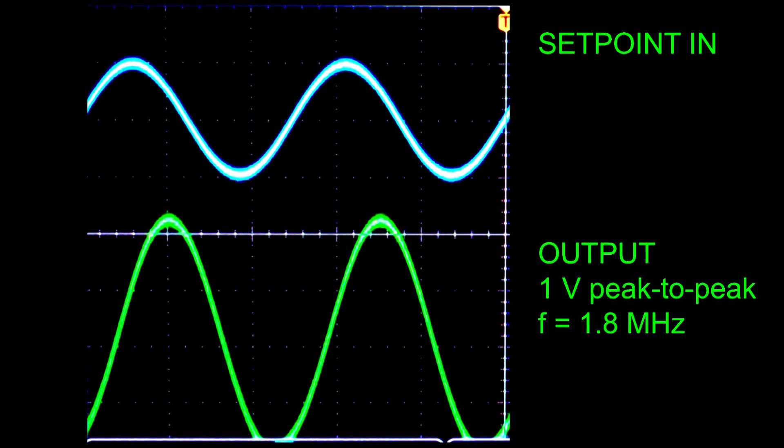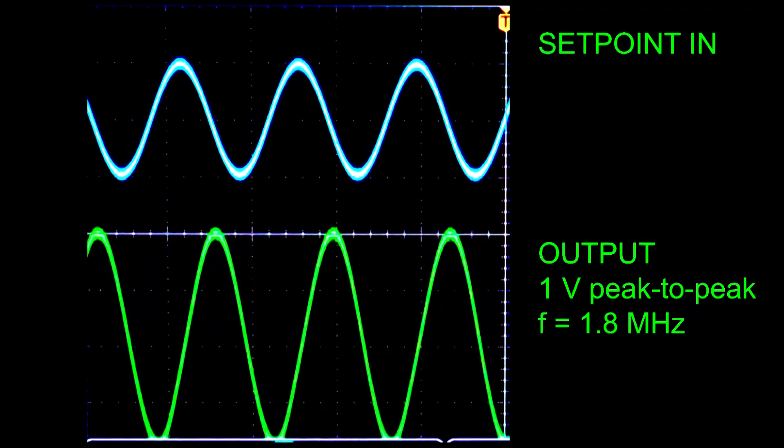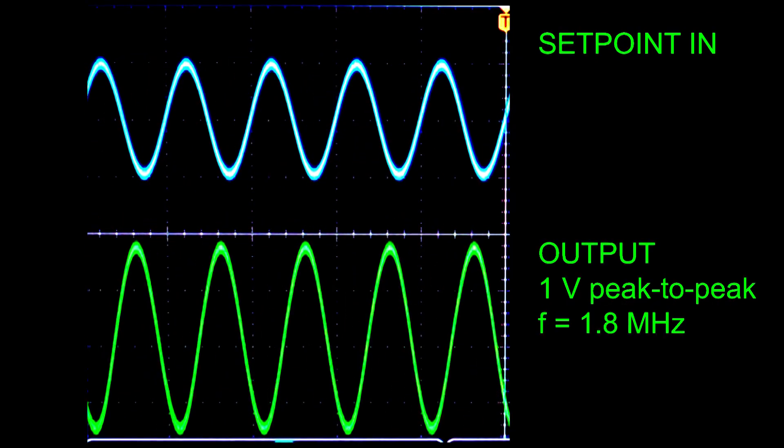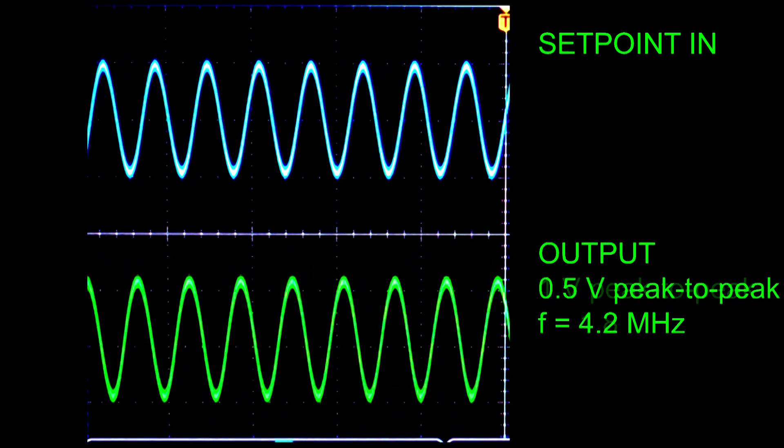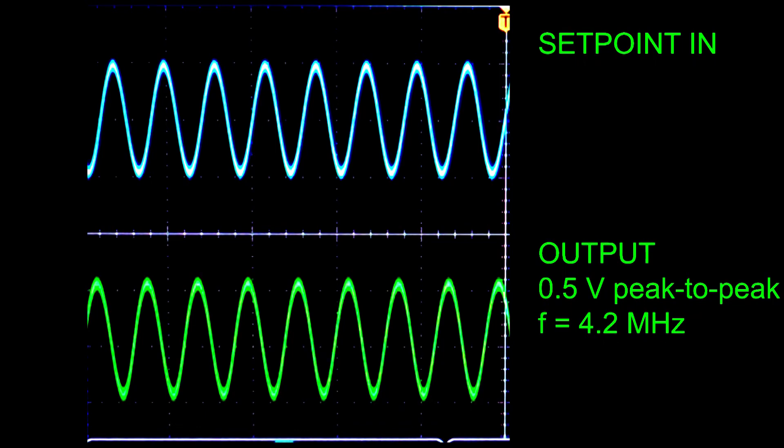But if you want to measure the bandwidth of a driver, put in a 1 volt peak-to-peak sinusoidal setpoint. Then, increase the frequency of the sine wave until the peak-to-peak value is 0.5 volts. That's the 3 dB bandwidth.